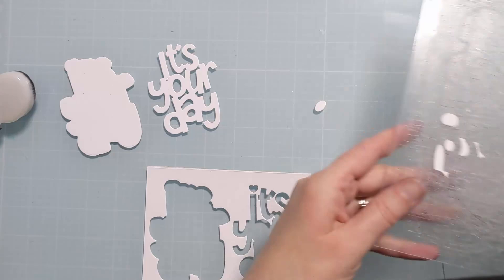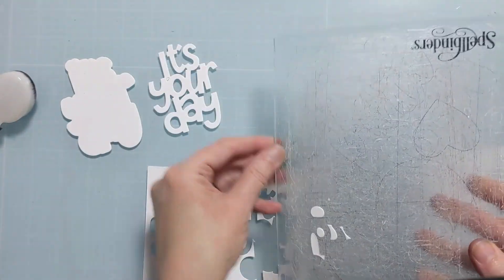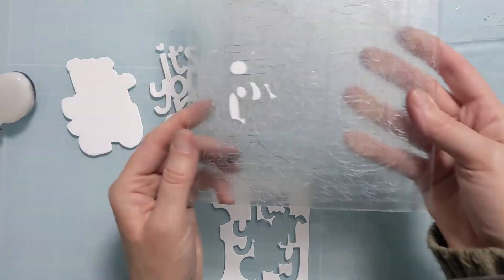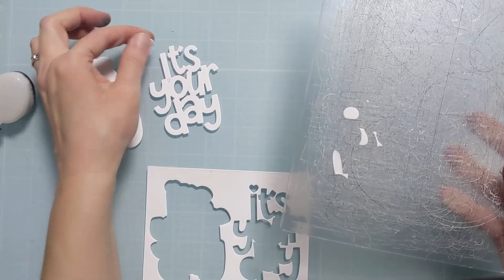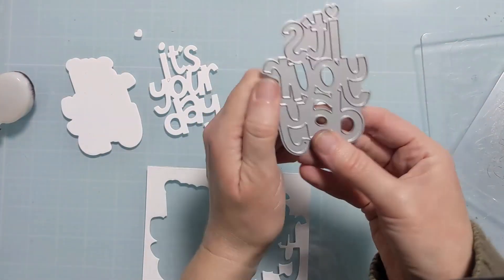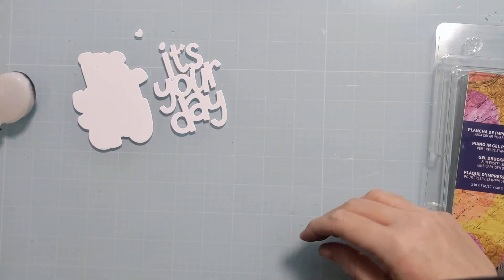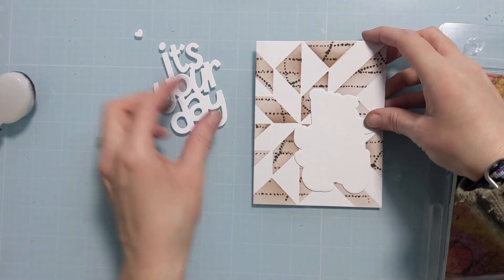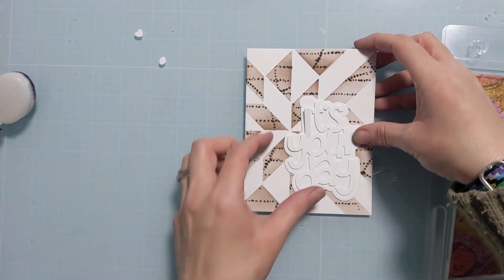Now here I wanted to show you this die comes with a cute little heart tittle, but since I'm going for a more masculine look I decided to use the opening of the A as the tittle instead. It's a really fun versatile way to use this die and kind of customize it more to your specific needs.